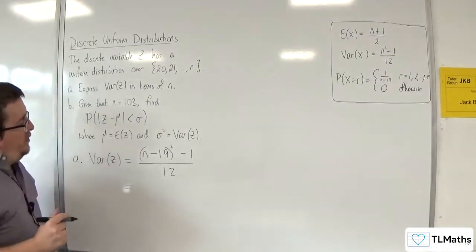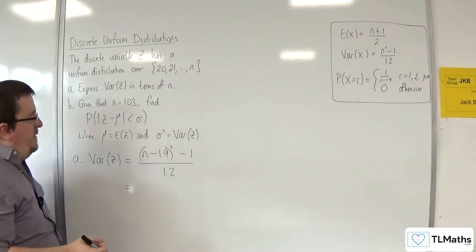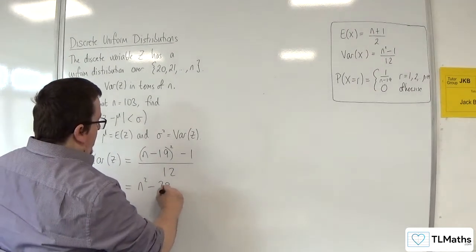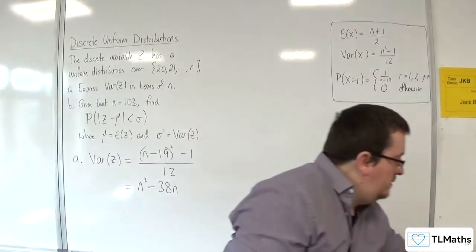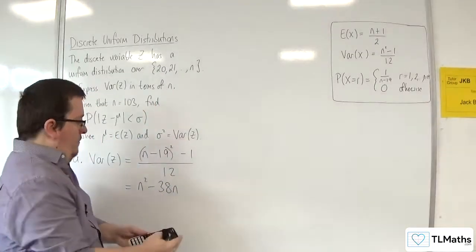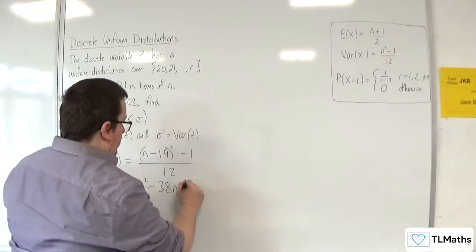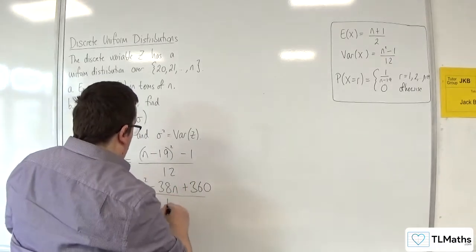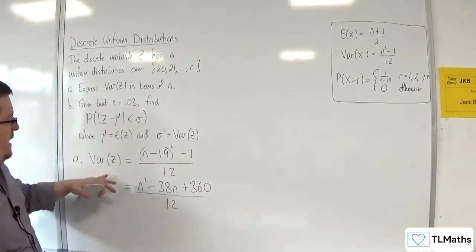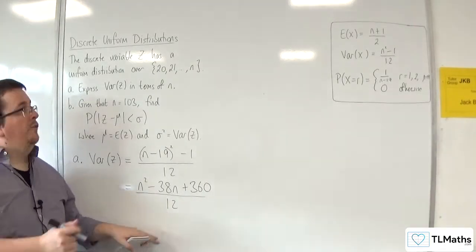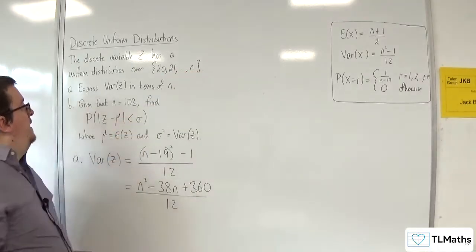What I now need to do is just simplify that. I'm going to expand out the numerator: n² - 38n, and then we've got 19² - 1, which is plus 360, over 12. That is the variance of z written in terms of this n that we have here.